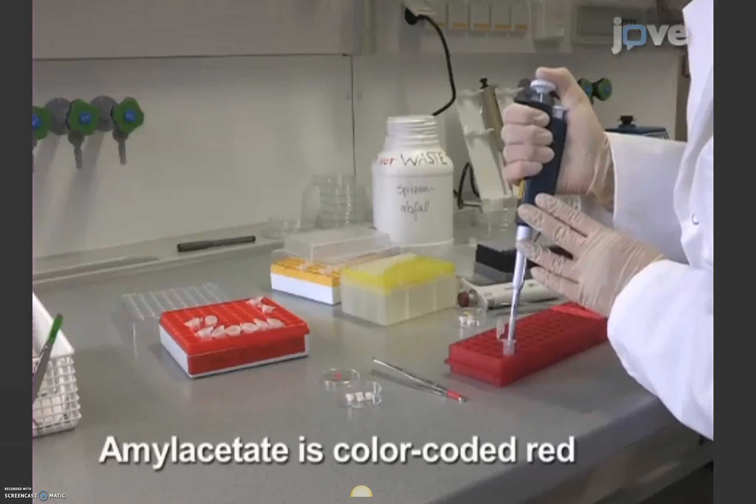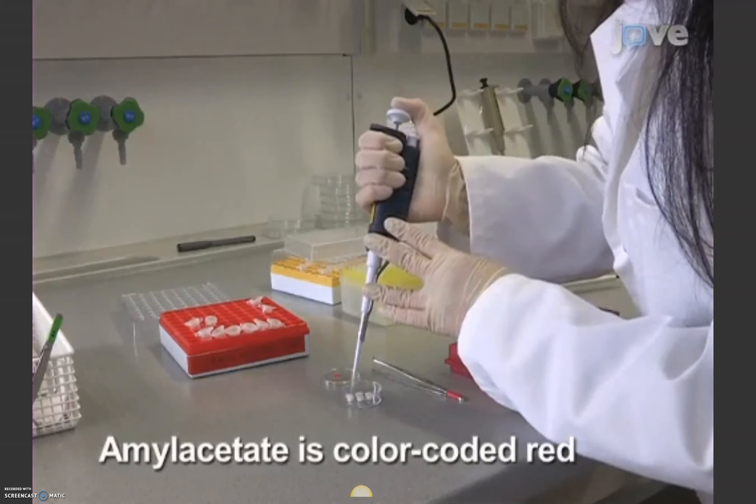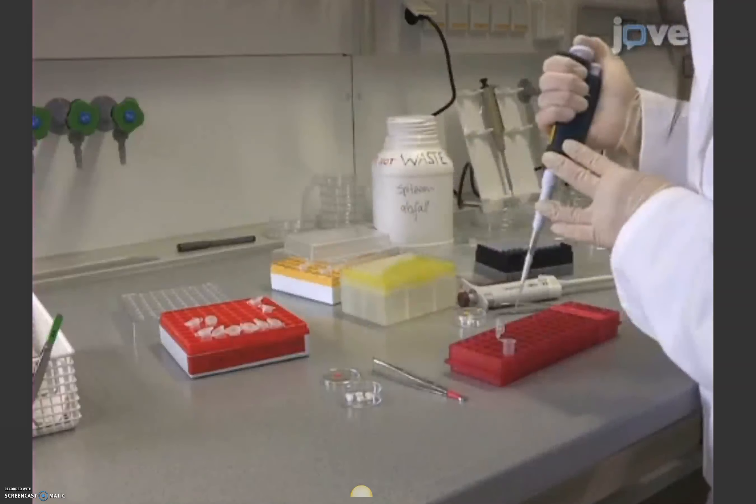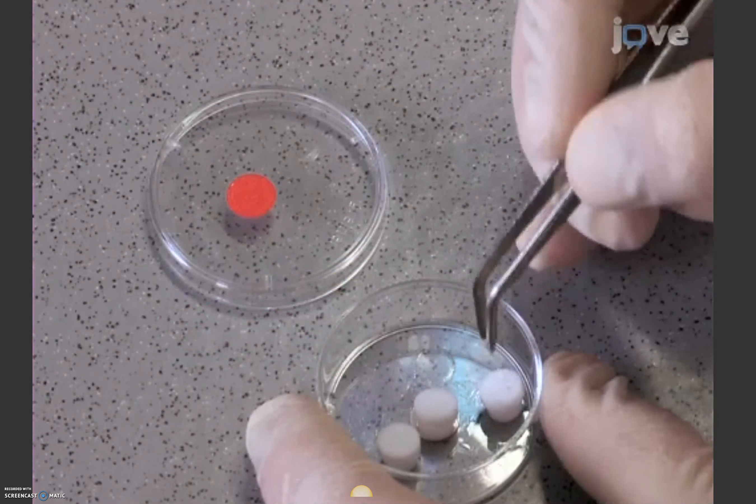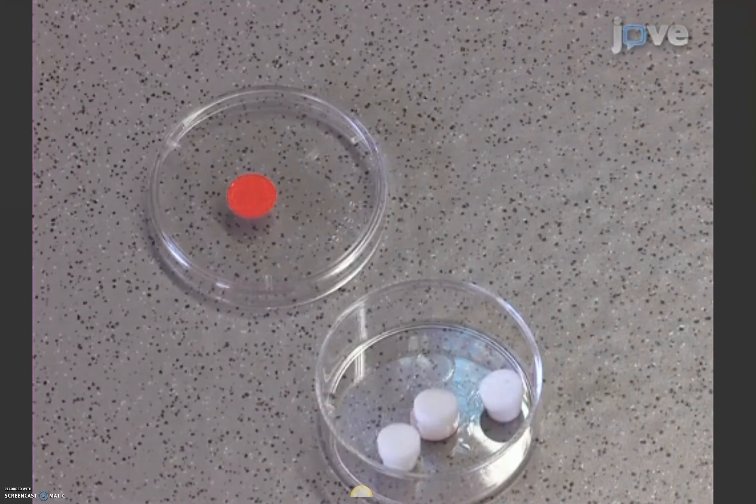Second, prepare another 3 odor containers with 10 microliters of amyl acetate diluted 1 to 50 in paraffin oil. This dilution is as attractive as the 10 microliters of pure 1-octanol.